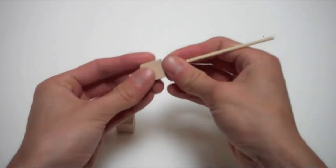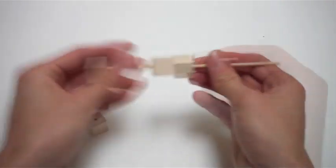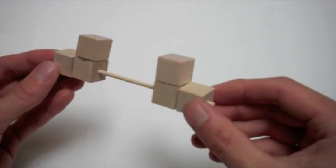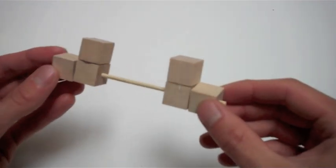Now we're going to make the hinge assembly by threading four cubes with holes through a 4.5 inch piece of bamboo skewer. Glue two more cubes on the innermost hinge cubes, like this.